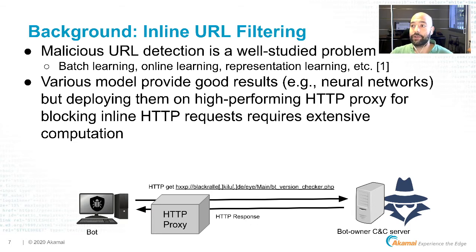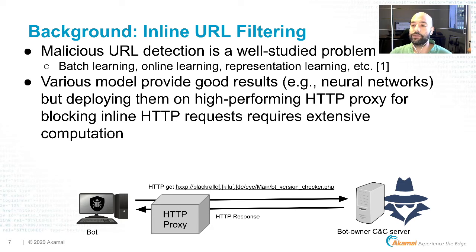With this question in mind, we consider how to detect that such a URL is indeed used by SpyEye. One approach is applying known systems of malicious URL detection using classifiers based on batch learning, online learning, and representation learning. These approaches commonly rely on traditional machine learning and neural networks which, despite providing very good results, are not very suitable to reside on high-performing HTTP proxies to scan inline communication due to their computational resource requirements. So we are looking for a solution that is able to scan URLs and make a decision without introducing a lot of latency or blocking inline communication.